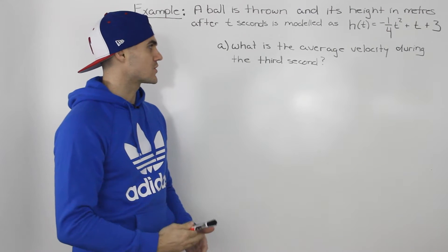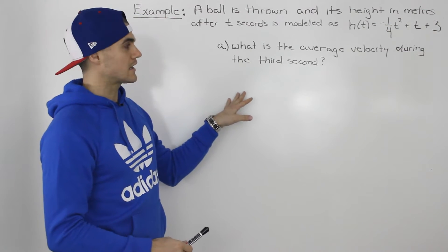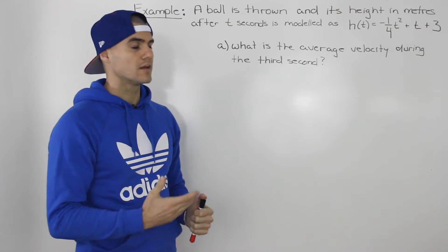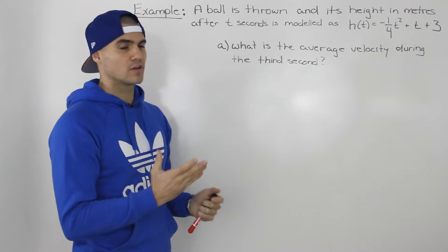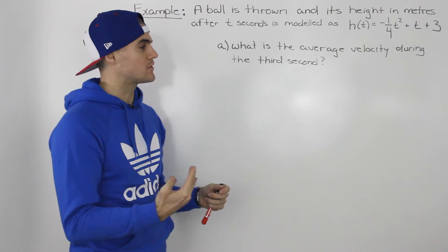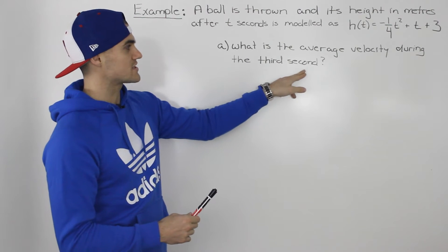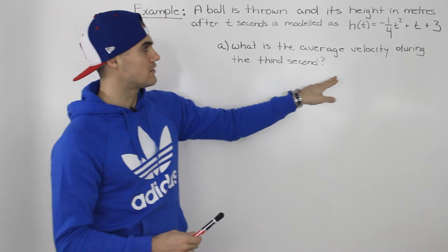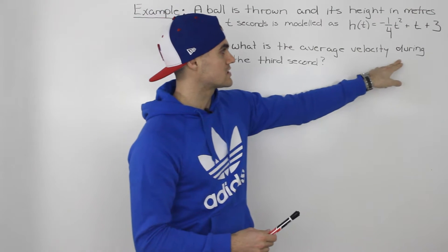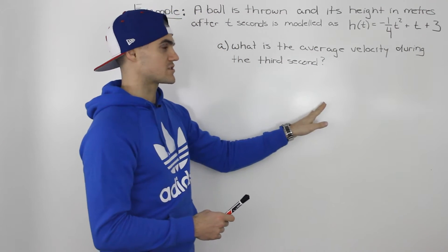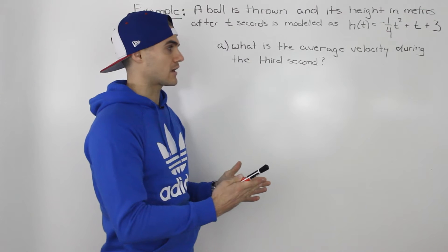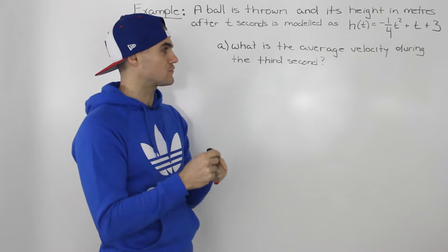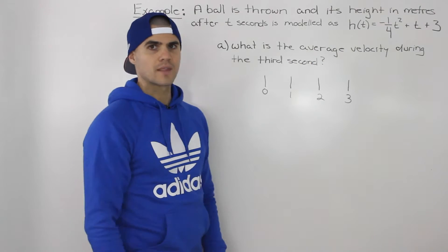Starting off with the first question: what is the average velocity during the third second? The wording can be a little confusing because they're asking for average velocity, which we know has to be between two points — it's the slope of the secant line. They're saying during the third second, so it's almost like they're giving you only one point in time. But the key is the word 'during' — it's during the third second, not at the third second. So because it's during the third second, there's a period of time between two points for which we can find the average velocity.